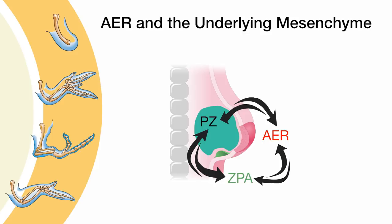I will address the nature of this activity later in the tutorial. These three parts — the AER, the progress zone, and the ZPA — all represent regions with essential roles in the development of the limb.